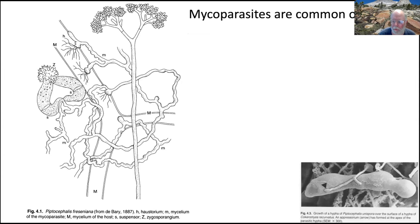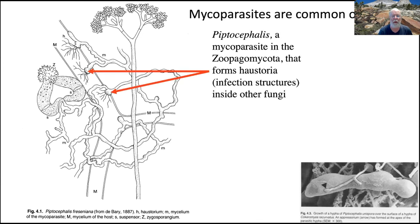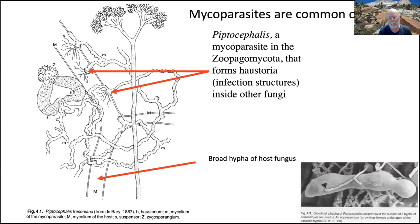There are also mycoparasites — fungi that attack other fungi. In this case, the diagram shows Piptocephalus, which is a mycoparasite on many of the early-arriving fungi on dung. The diagram shows its little infection structures called haustoria entering into the broader hyphae of its host. In the right-hand corner, a scanning electron micrograph shows the small hyphae of Piptocephalus on top of its host. So again, this is a whole ecosystem on a fine scale.